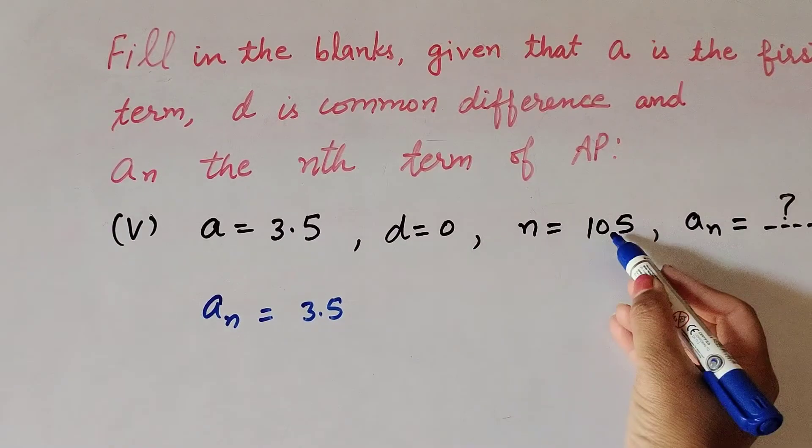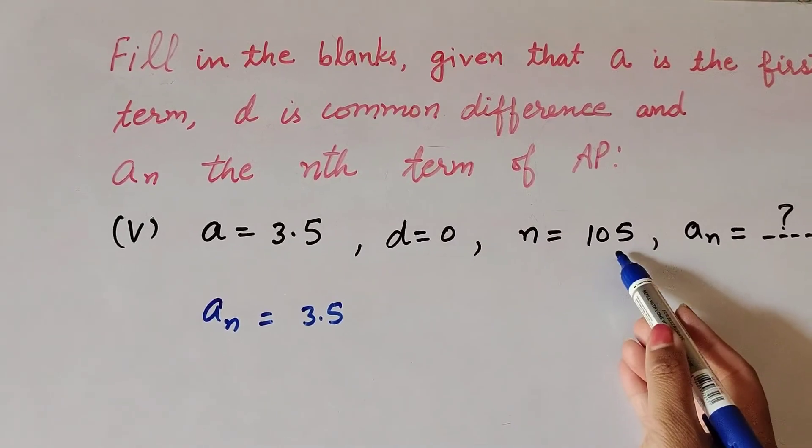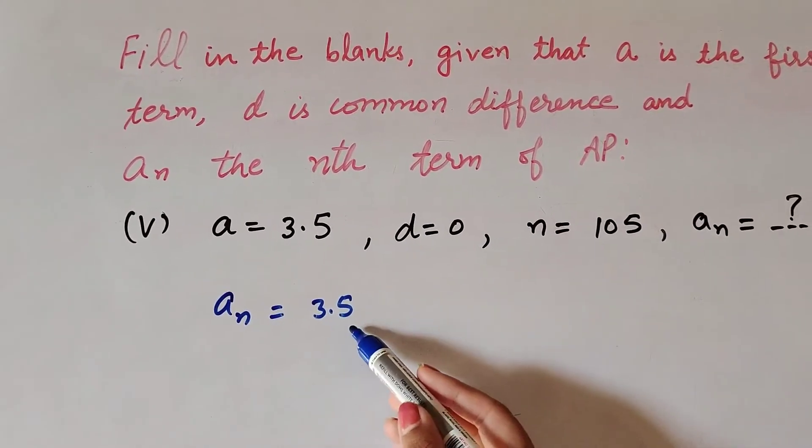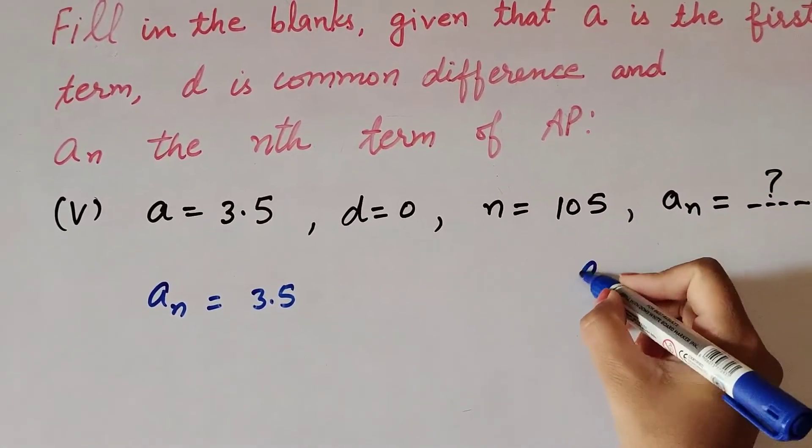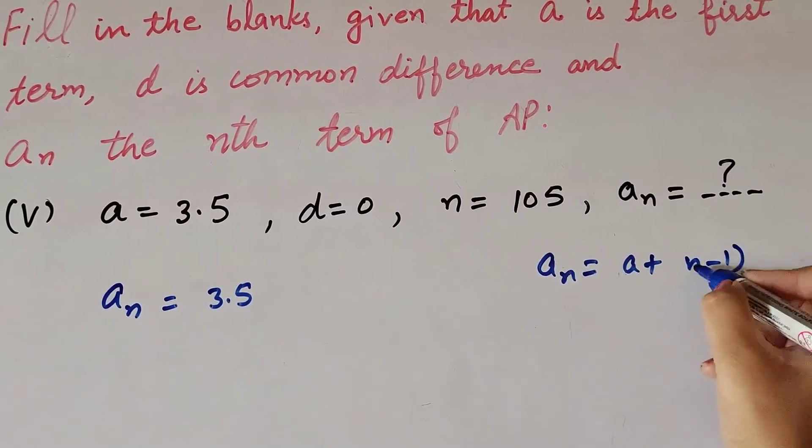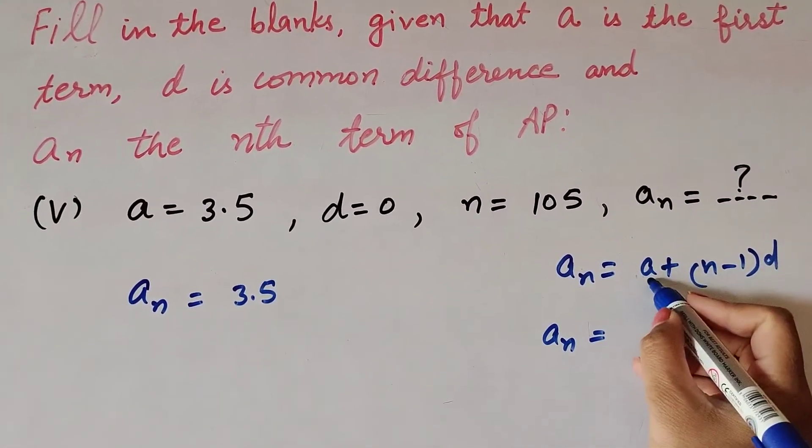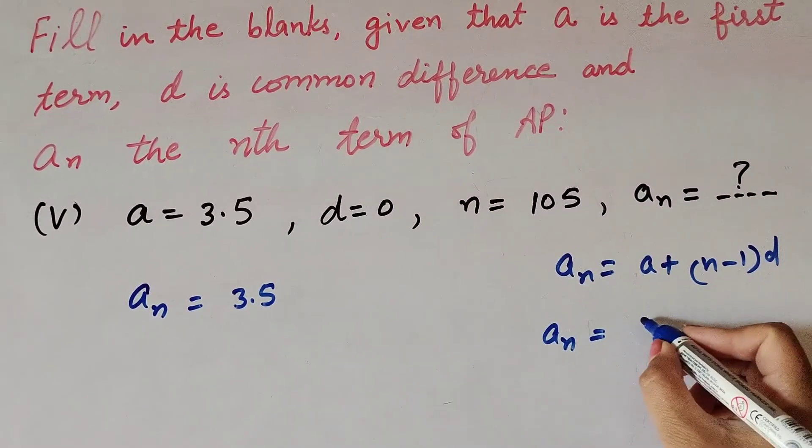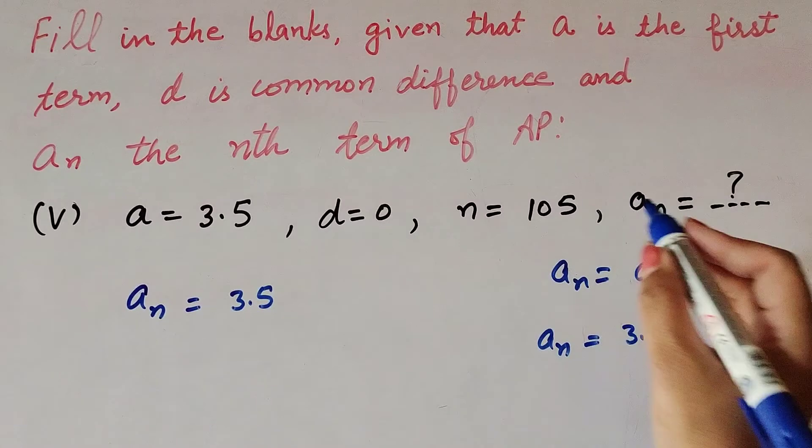Given d equals 0, n equals 105, when first term 3.5 is added to the difference we get a105 equal to 3.5. We also use the formula: an equals a plus (n minus 1)d. We have to find an, where first term is 3.5, n equals 105 minus 1, and d is common difference 0.